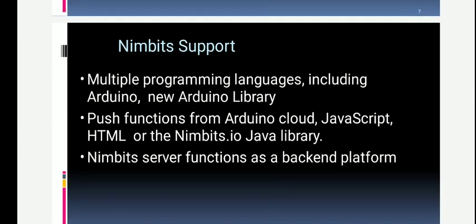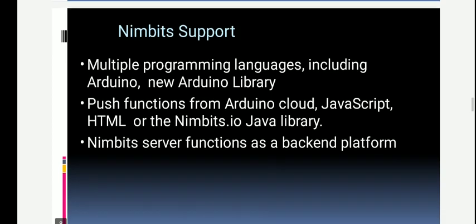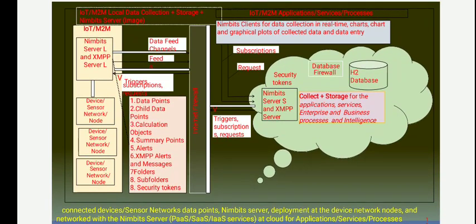The Nimbits platform already supports multiple programming languages like Arduino, Python, JavaScript, HTML, NBIT Java, and Evo Library. The Nimbits server acts as a back-end platform. This diagram shows various connected devices, how data is taken from those devices, how it is represented as data points, and how that data is deployed at device network nodes — meaning at the cloud, application, and services layer.